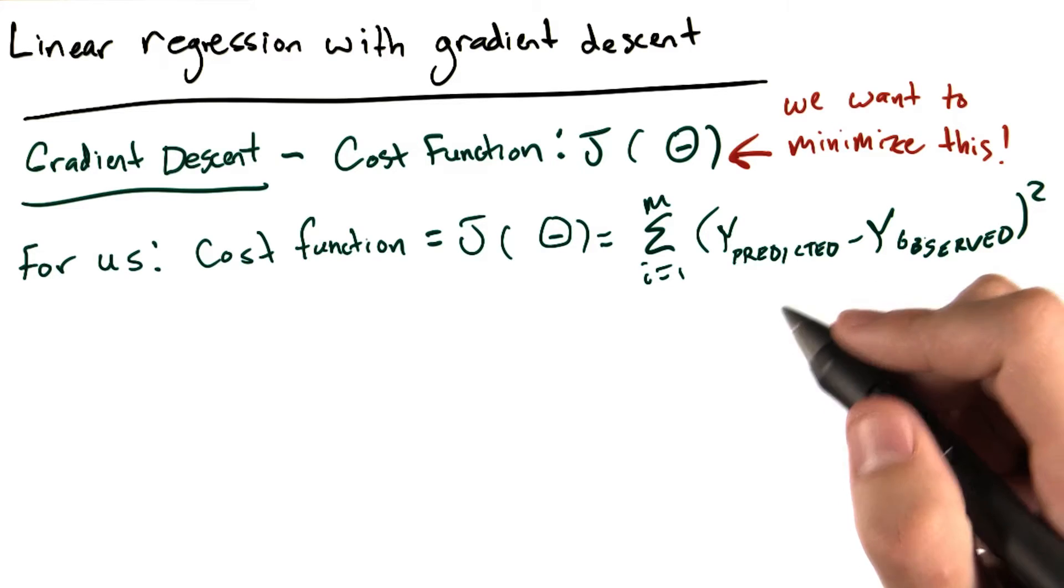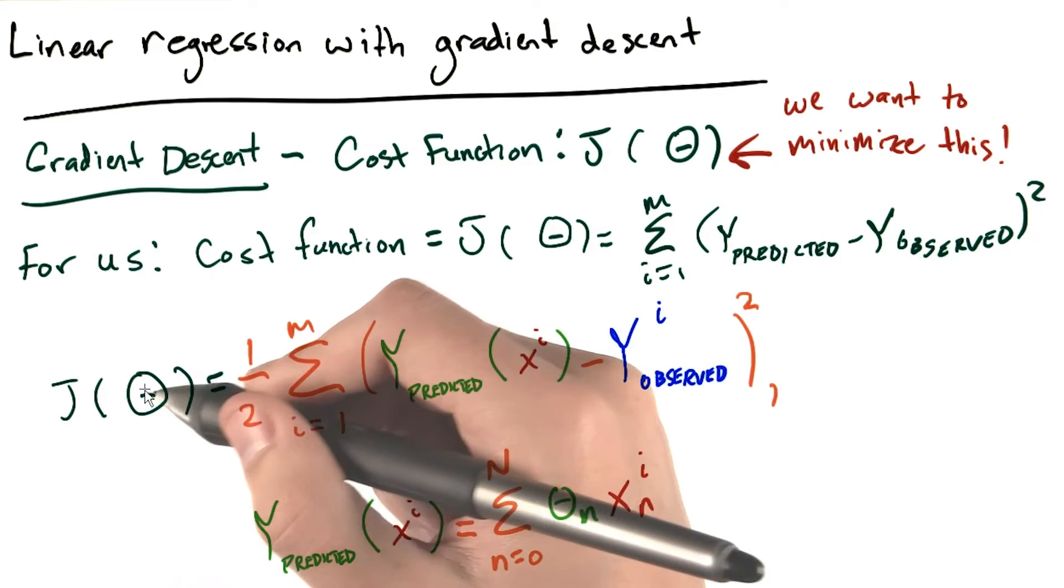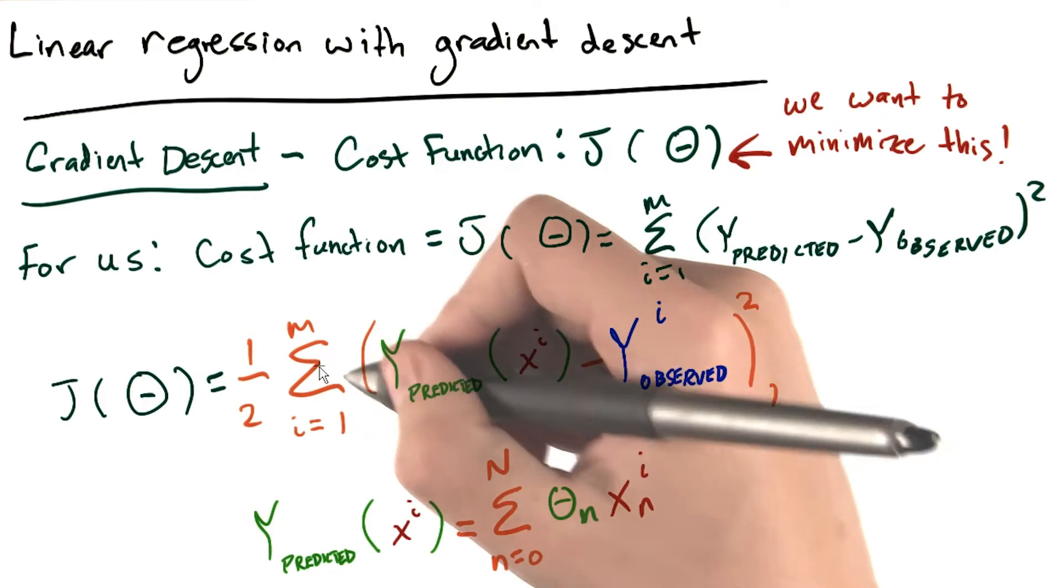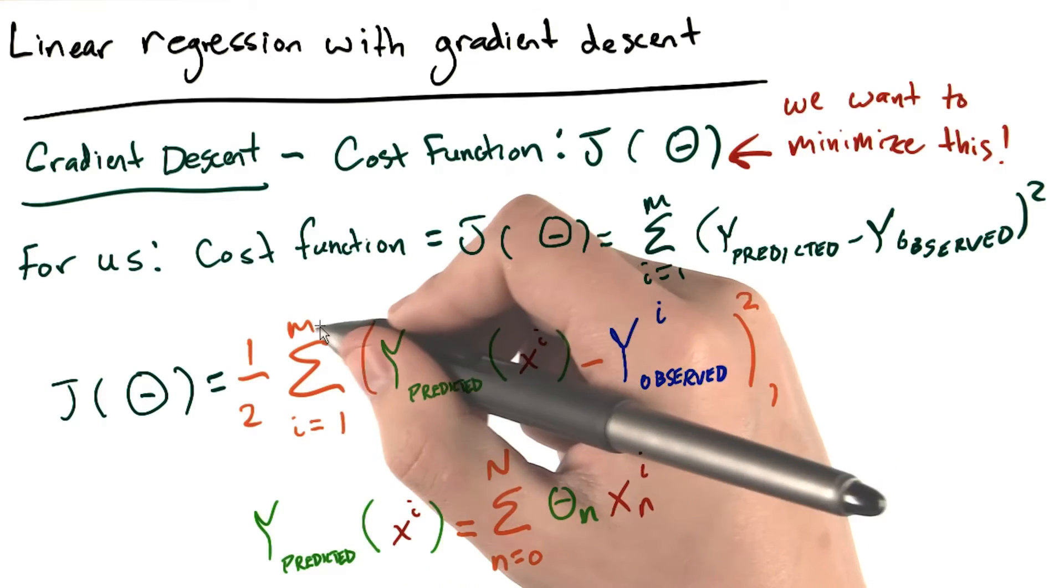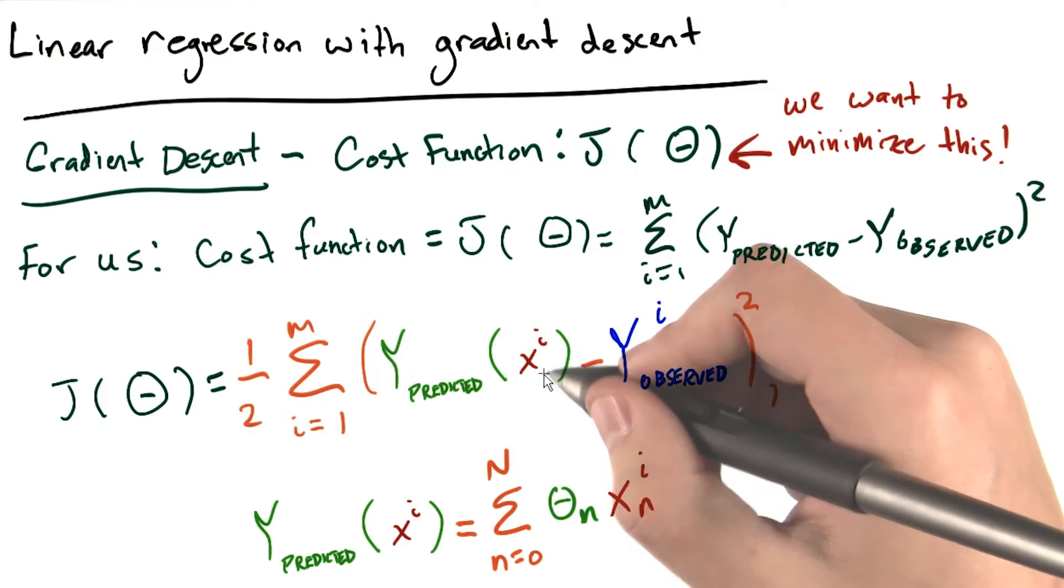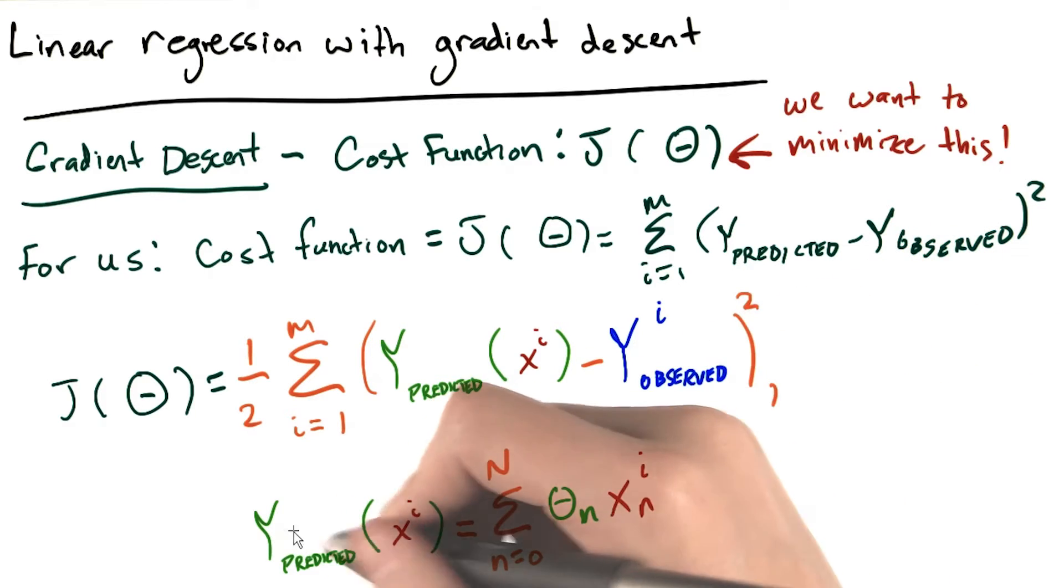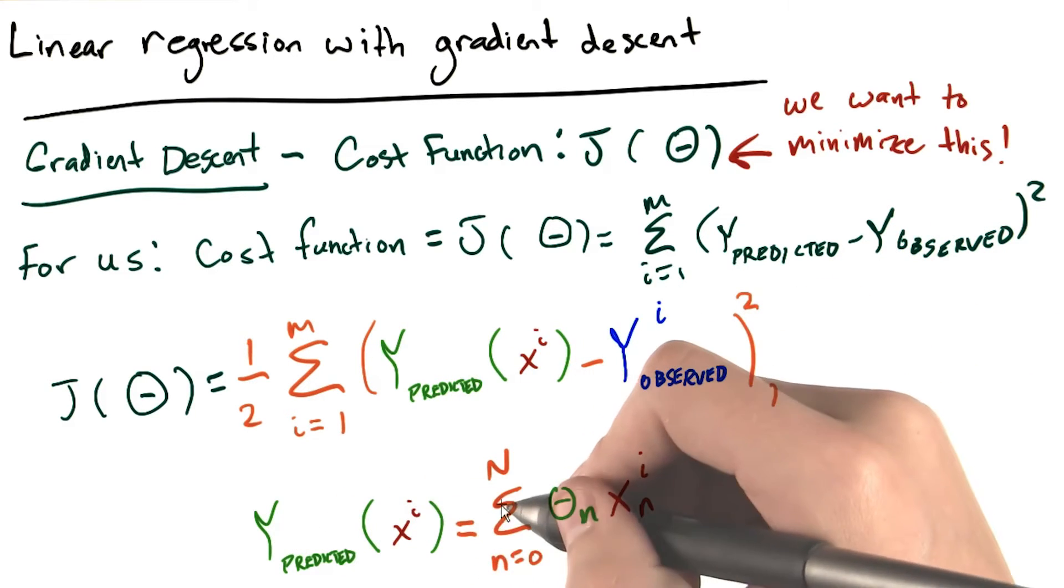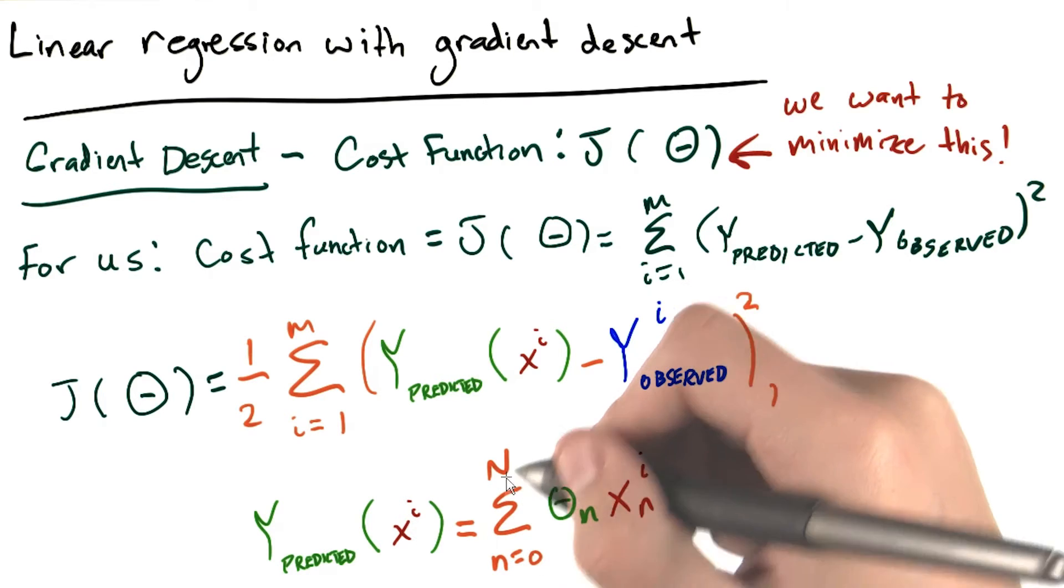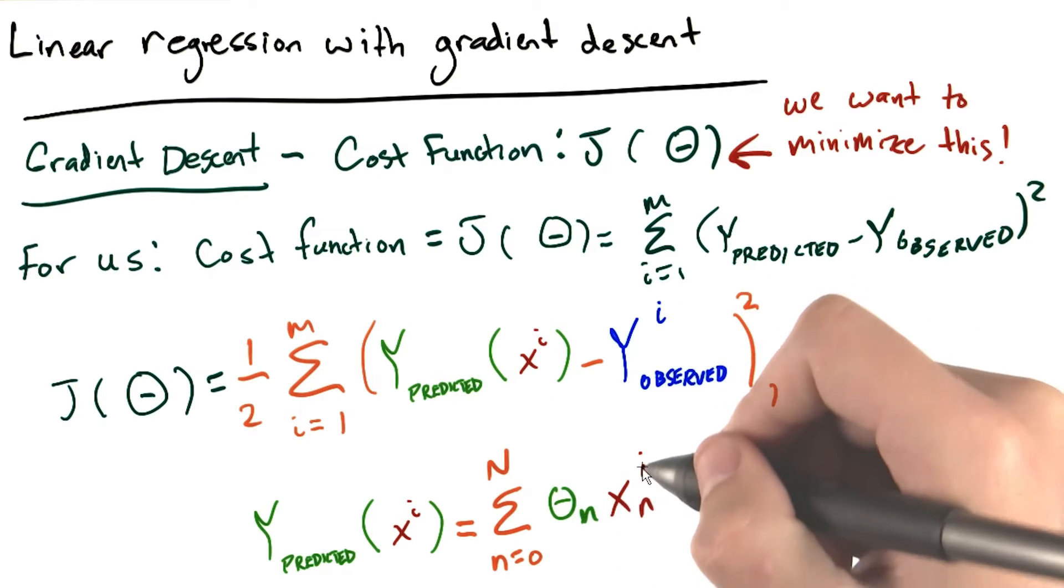I'm going to formalize this a little bit and say this: J of big theta is equal to 1/2 times the sum from i equals 1 to m of y predicted of xi minus y observed i squared. Where y predicted xi equals the sum from n equals 0 to big N of theta n times xn i.